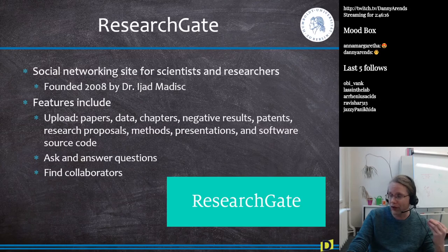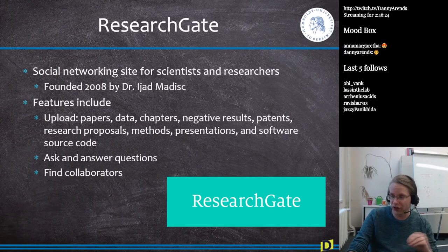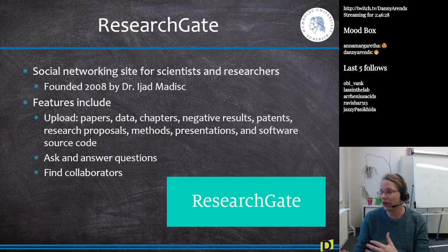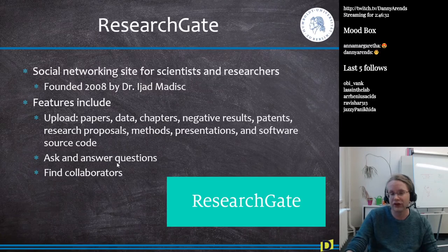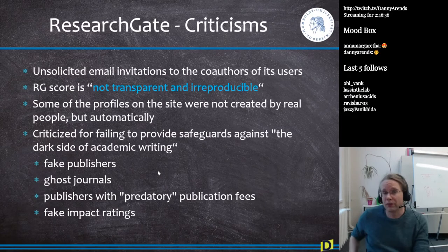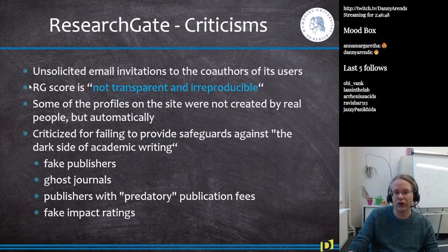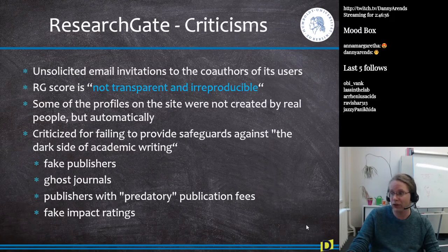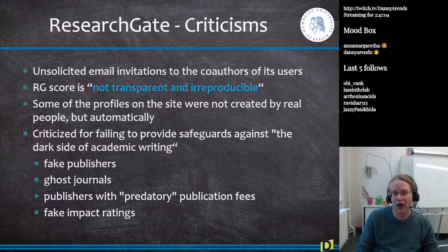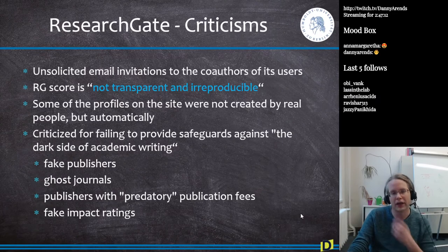ResearchGate assigns every scientist on the platform a ResearchGate score, which is a weighted score combining your platform activity with what you publish. However, there's a lot of criticism about it. One major controversy was that ResearchGate sent emails in users' names to their co-authors without permission, to get them to sign up. They don't do that anymore, I think.